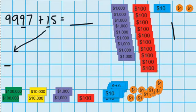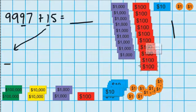So now you can see I've got 10 $100 notes, and I can't have that because I can't have 10 in one column. So what I'm going to have to do is swap these 10 $100 notes at the bank for one $1,000 note — again, it's just a straight swap, I'm not getting any more or ending up with any less.